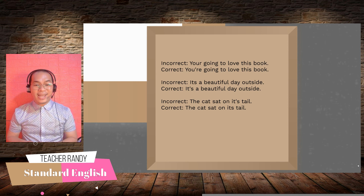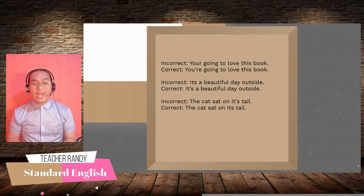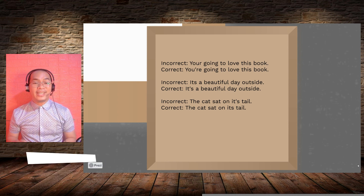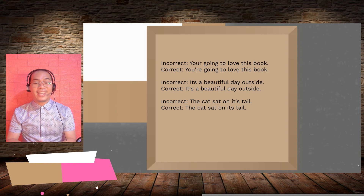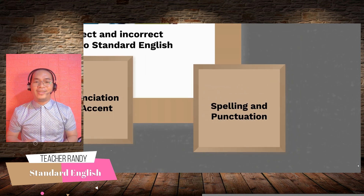However, 'The cat sat on its tail' uses I-T-S without an apostrophe, as it is the possessive form. It should be: 'The cat sat on its tail.'